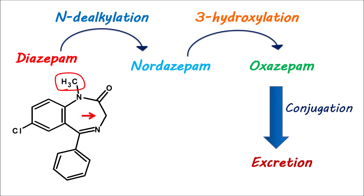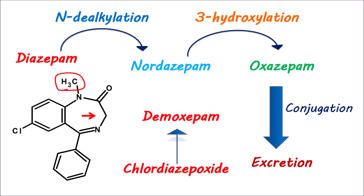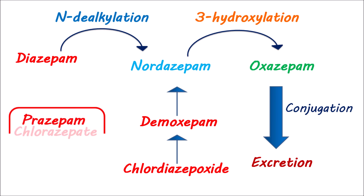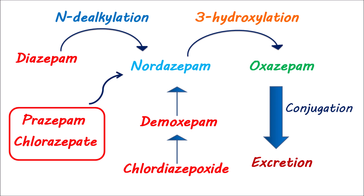Since nordiazepam is a long-acting active metabolite, those benzodiazepines that are converted into it are also long-acting. For instance, chlordiazepoxide is initially converted into demoxepam, which is then converted into nordiazepam. Likewise, prazepam and clorazepate are also converted into nordiazepam, so they are long-acting. Contrarily, temazepam is not converted into nordiazepam — instead, it is metabolized into oxazepam. Consequently, it is a short-acting benzodiazepine.